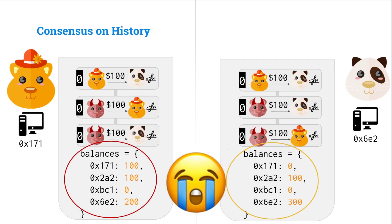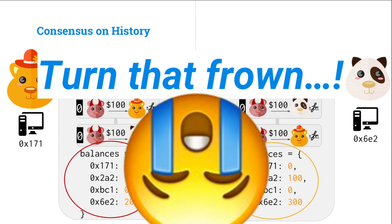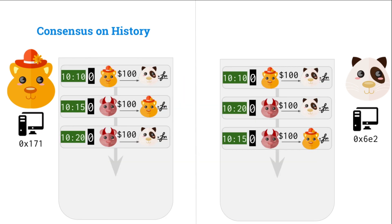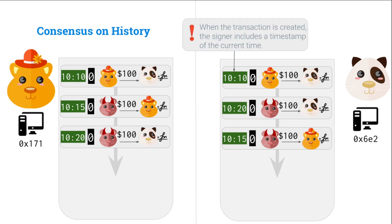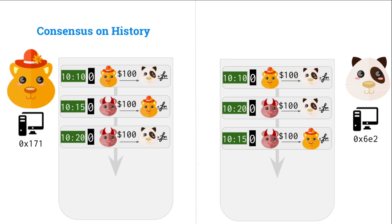How can we solve this? We can just add timestamps. When a transaction is created, the signer can just include a timestamp saying this was the time that I created this transaction. For instance, here, Alice sending to Jing — we look at the time and say it's 10:10. That sounds about right. We'll include it in our transaction and sign.